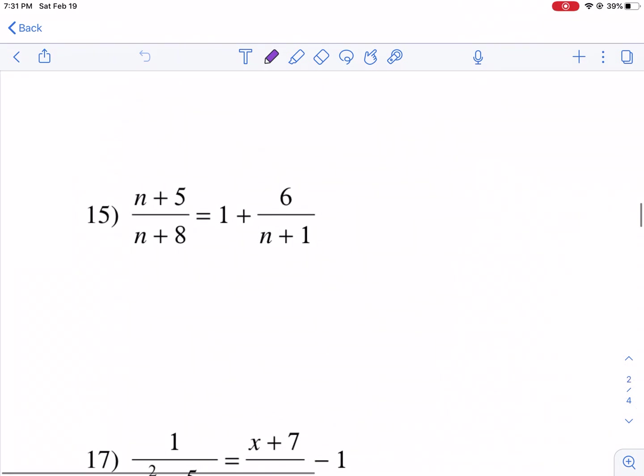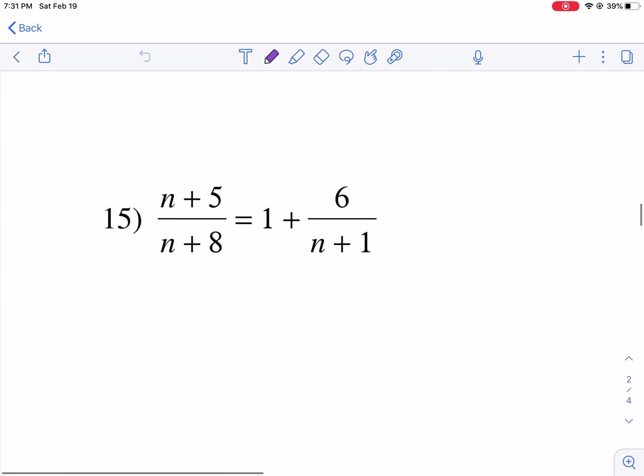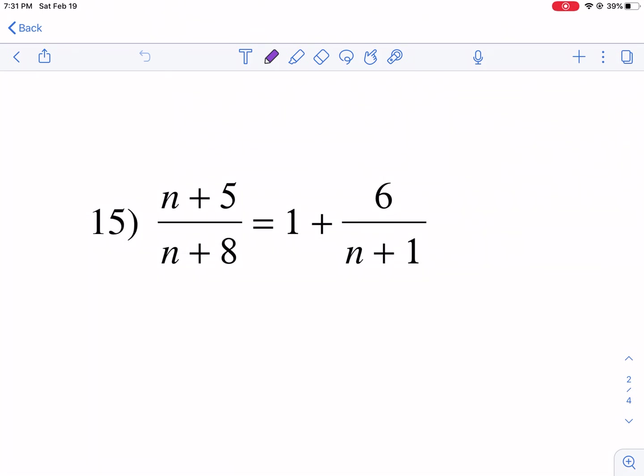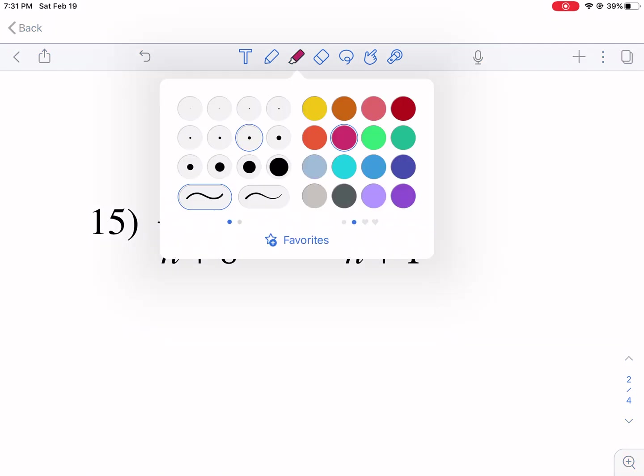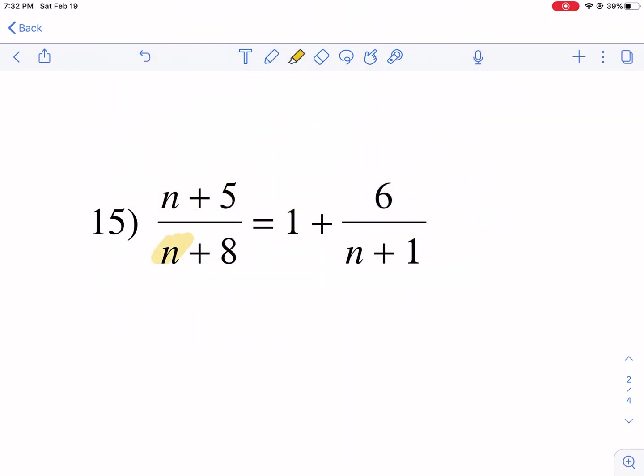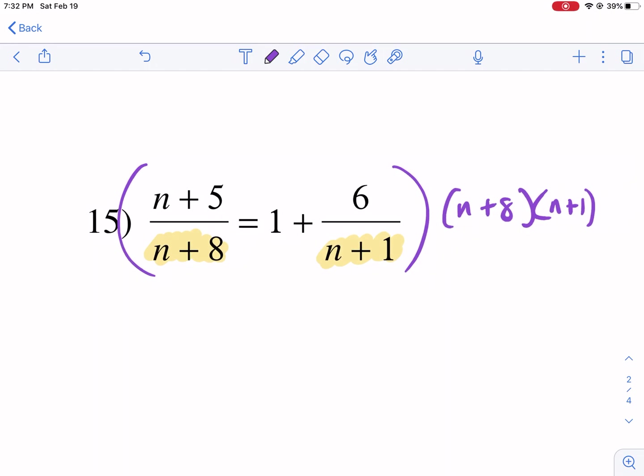We're going to jump right into it. This is going to be part three for most of you. So let's get right to it. We have a rational equation here with fractions right there and there. The best way to handle this is to multiply by the terms in the bottom as a product. So we're going to multiply both sides by n+8 and n+1.